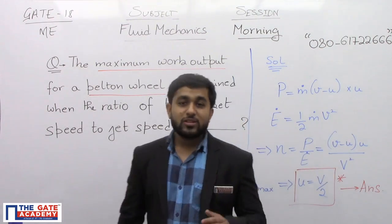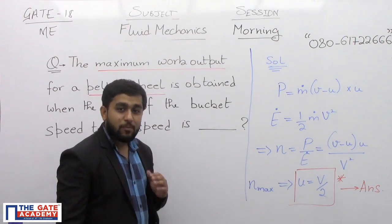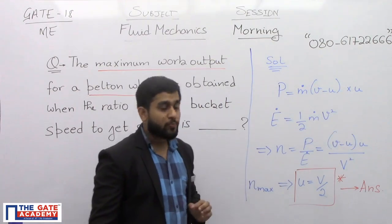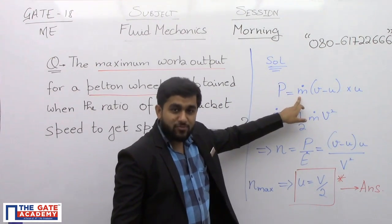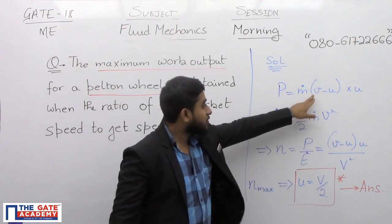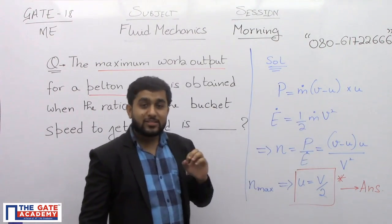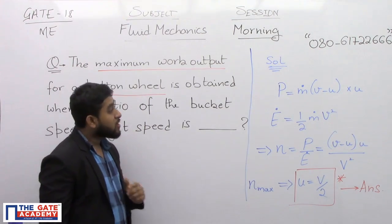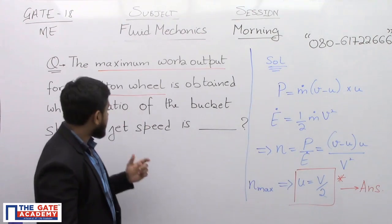When we talk of the Pelton turbine, we know that the power produced in the Pelton turbine is m dot (v minus u) into small u. M dot is the mass flow rate, mass that is coming out of the nozzle in one second. The small v is the jet speed, that is which is mentioned here. Small u is the bucket speed, which is again mentioned here.